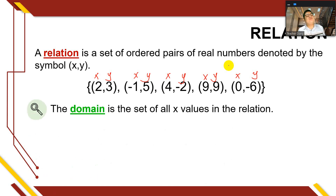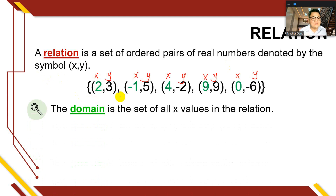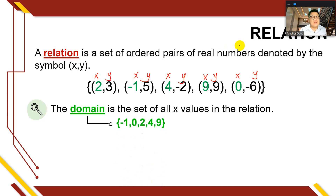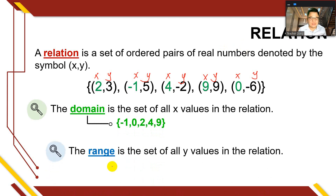The x-values are called the domain. The domain is the set of all x-values in the relation. In this example, the domain will be the first numbers: 2, -1, 4, 9, and 0. Those are what we call the domain of this relation.